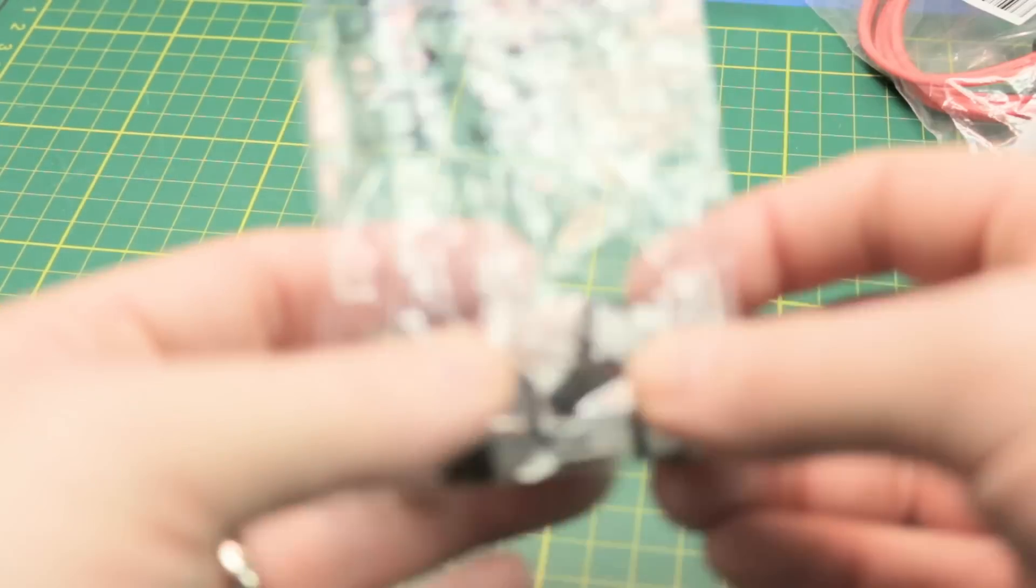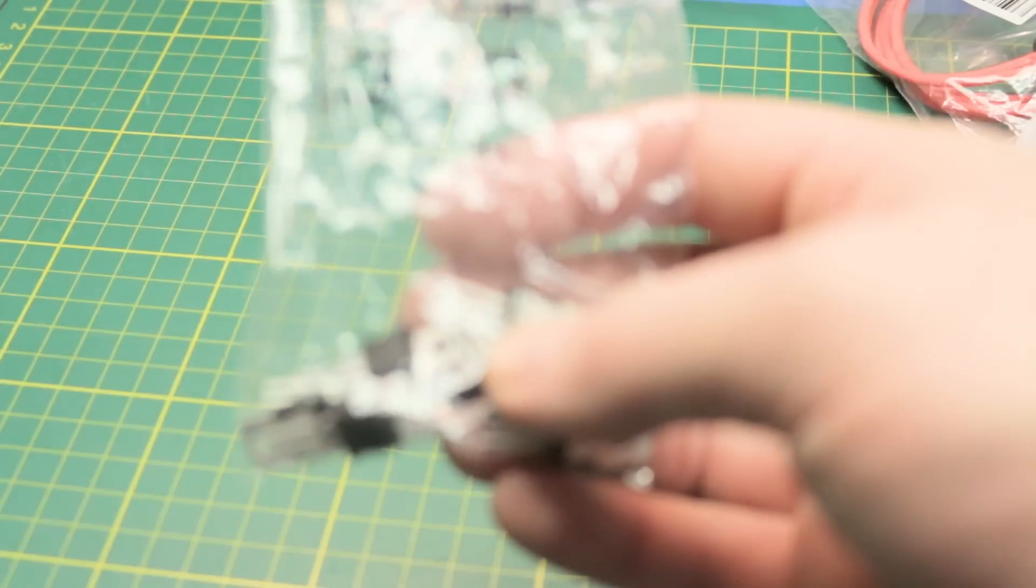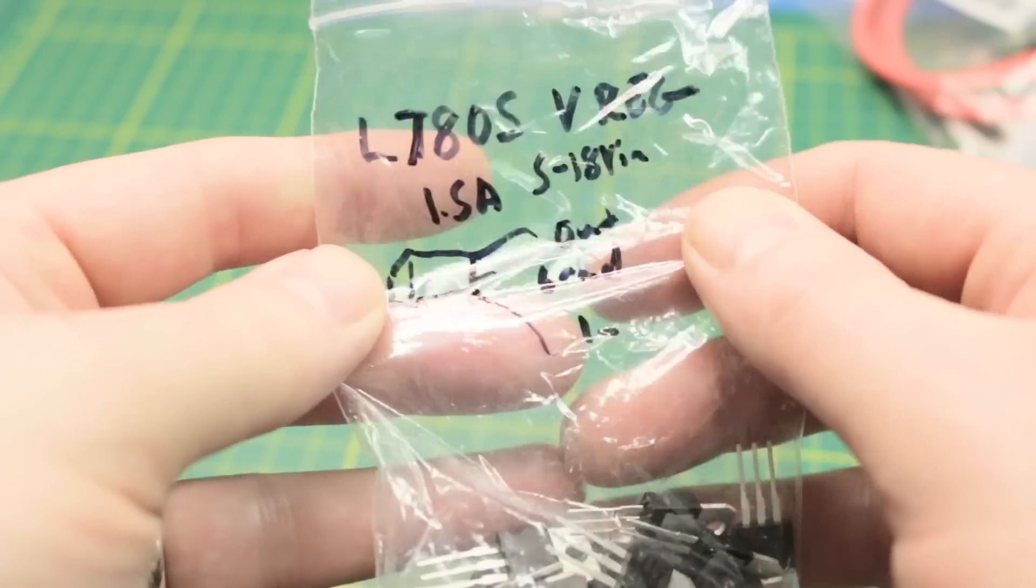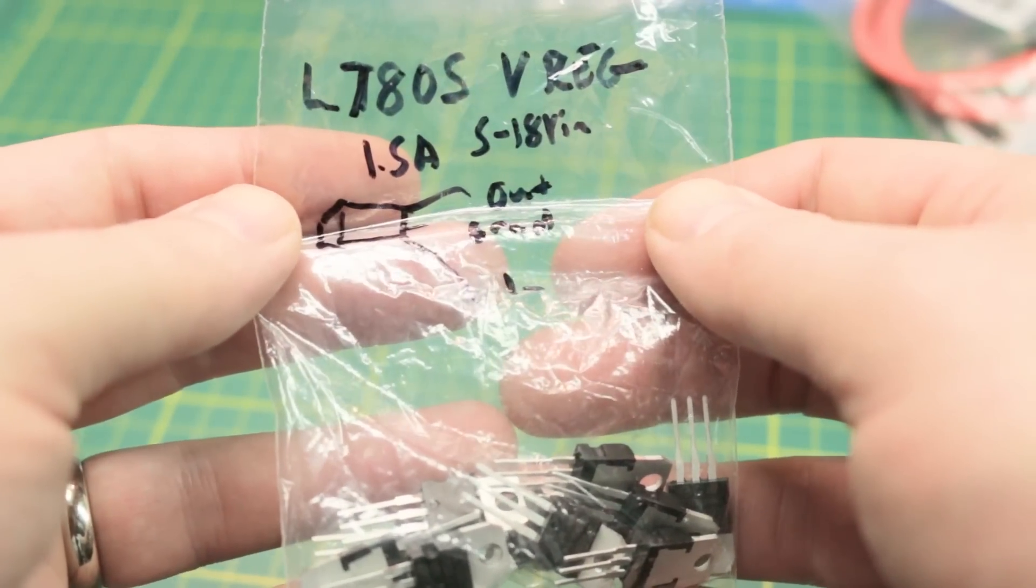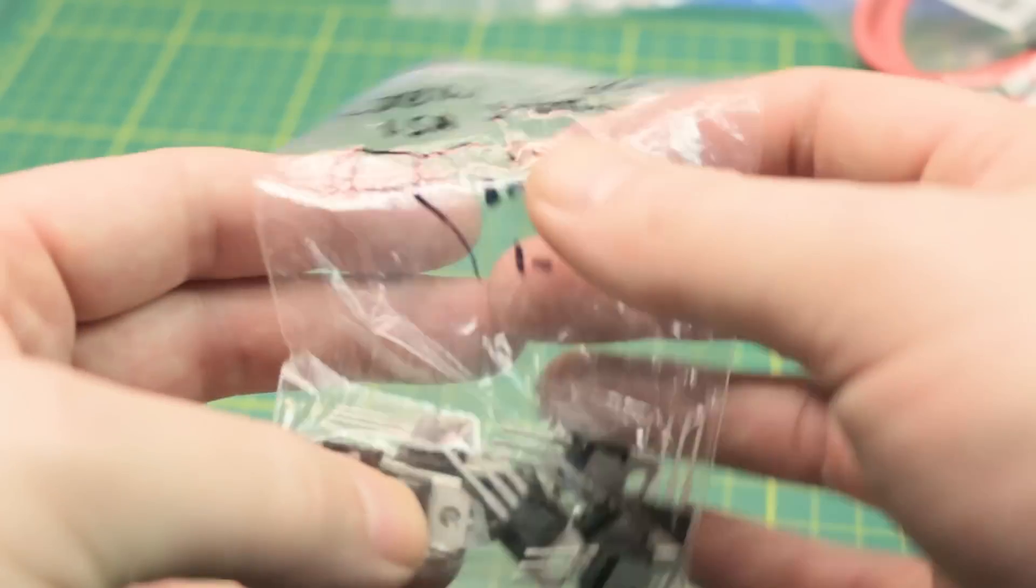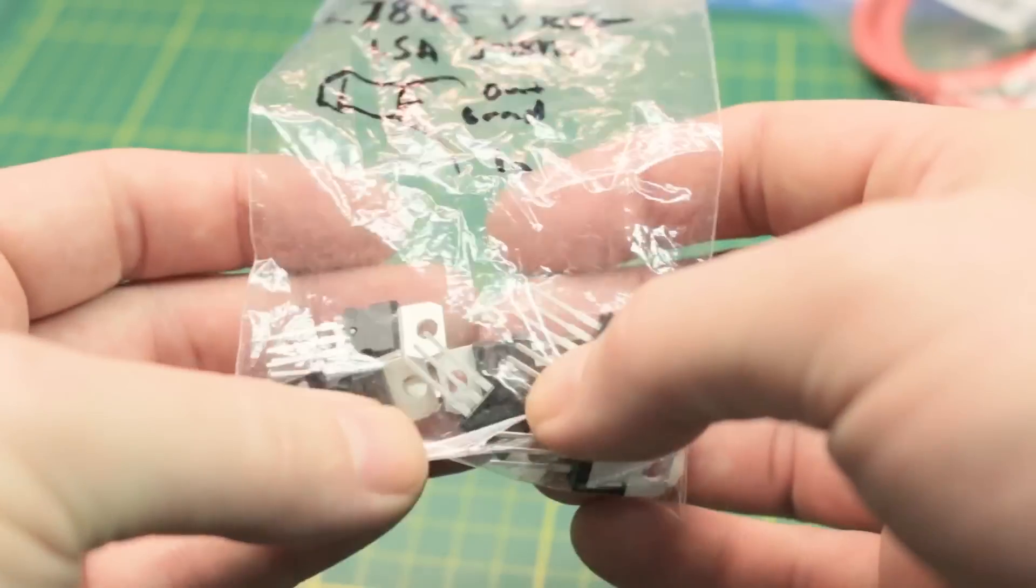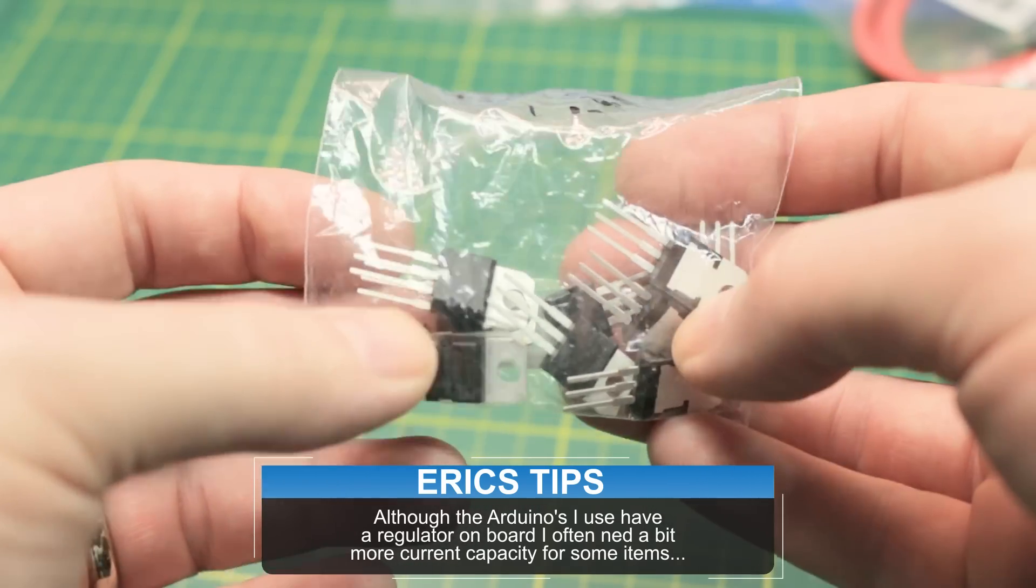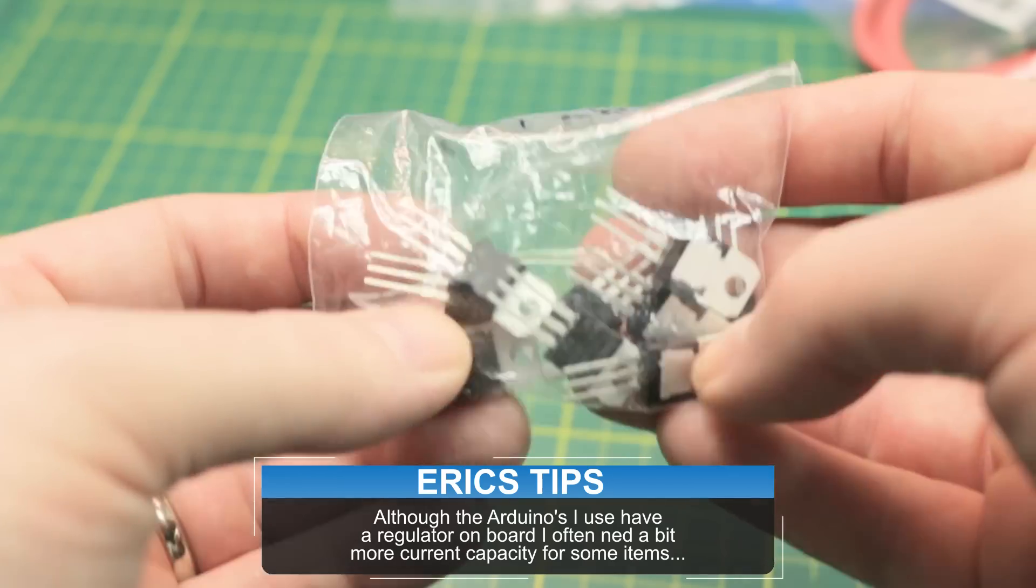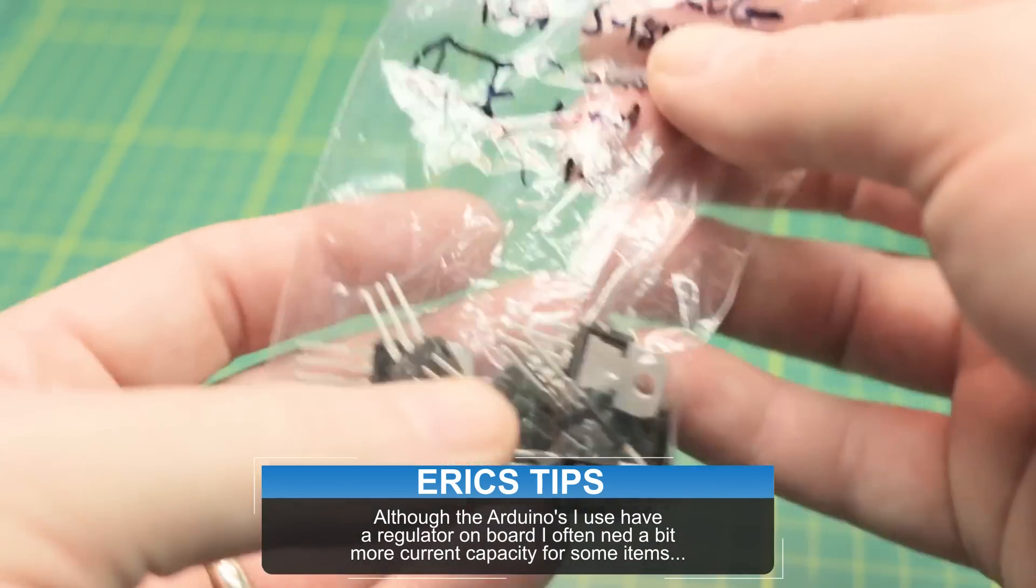In this bag we have some voltage regulators. These are L7805 regulators. They're one and a half amp, five to 18 volts in. And I quickly just scribbled the pin out on them. Great for Arduino projects or any small electronics project. Really robust, really common little voltage regulator.